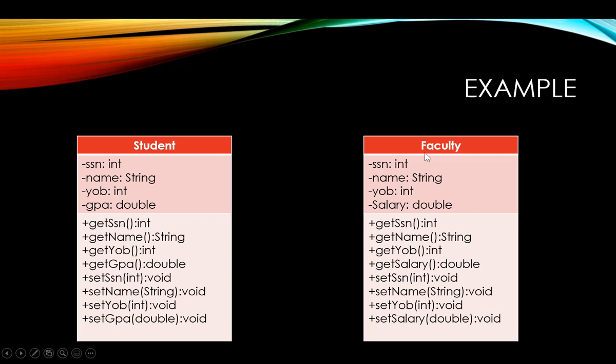Same thing for my faculty — I want to keep track of their social security number, their name, their year of birth, and the salary. And for each one of these instance variables I created a getter and setter.